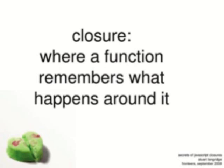So, shorter definition. This is the bit you don't try on the JavaScript committee because they'll say 'oh, that's not the truth,' but this is what it actually boils down to: a closure is where a function remembers what happens around it. If you start off with that in your head — things that happen around the function, that function can remember it — if you start off thinking like that, you'll be pretty much alright.